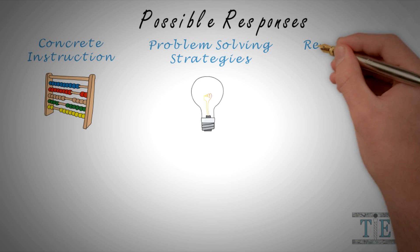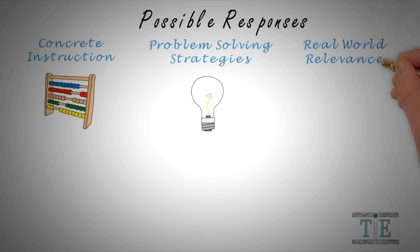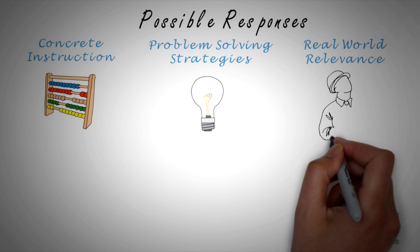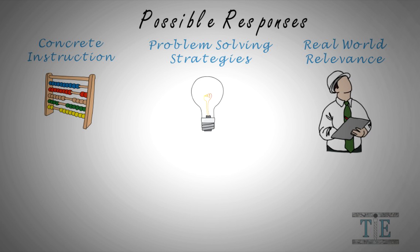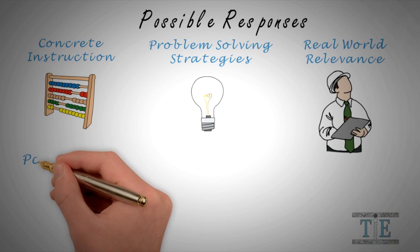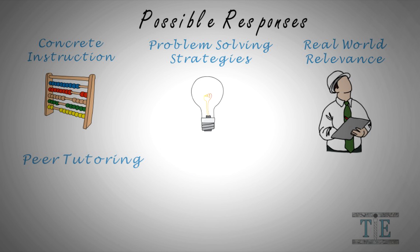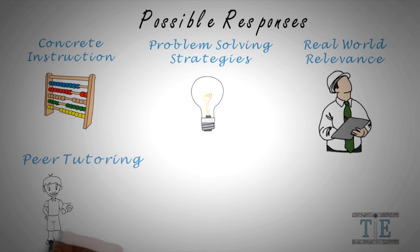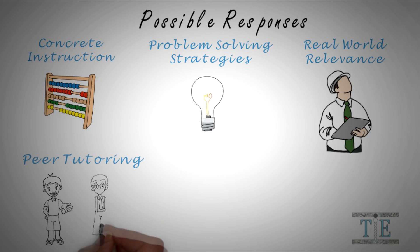Third, real-world relevance. Research has shown an increase in student engagement when the mathematics they learn is related to real-world situations and problems. Fourth, peer tutoring of students. Peer tutoring can help both students — the struggling student will benefit from hearing a different voice than the teacher, and the tutor will deepen their understanding through explaining the material to the struggling student.